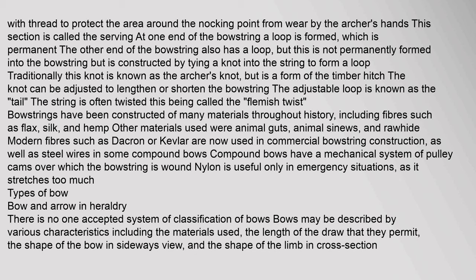There is no one accepted system of classification of bows. Bows may be described by various characteristics including the materials used, the length of the draw that they permit, the shape of the bow in sideways view, and the shape of the limb in cross section.